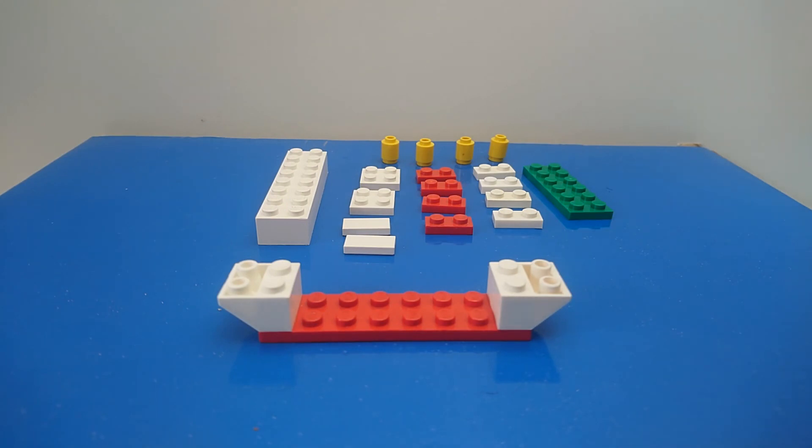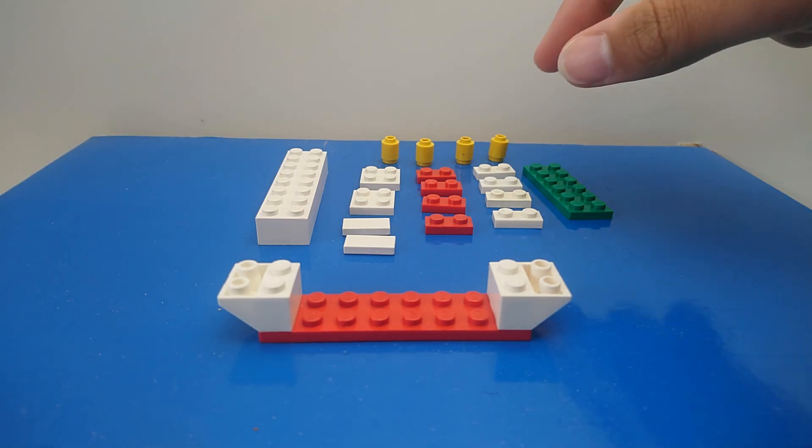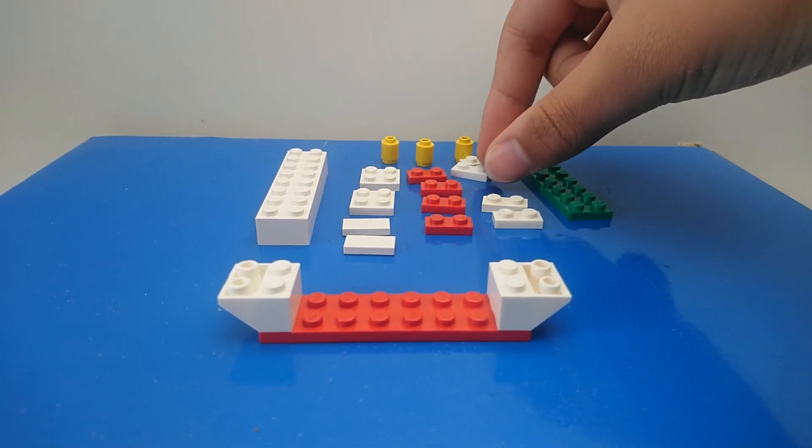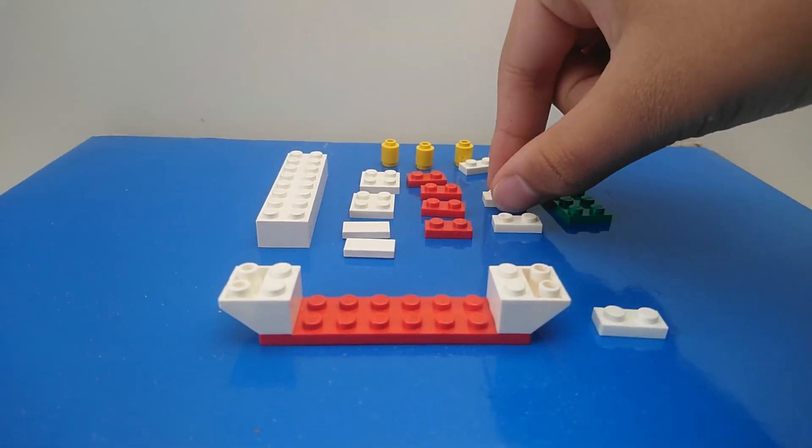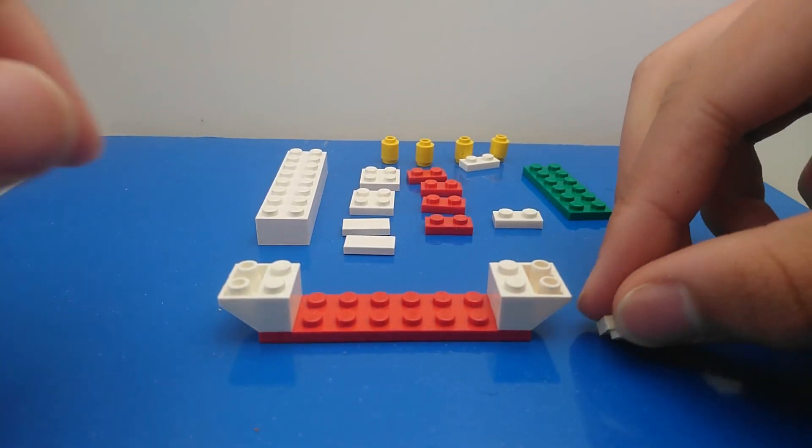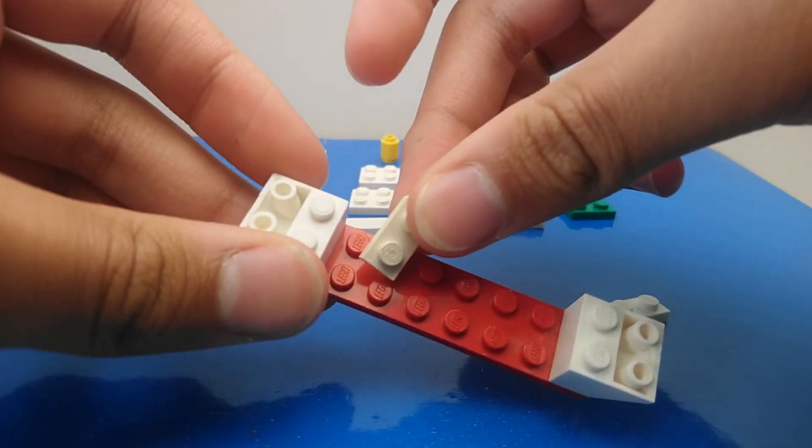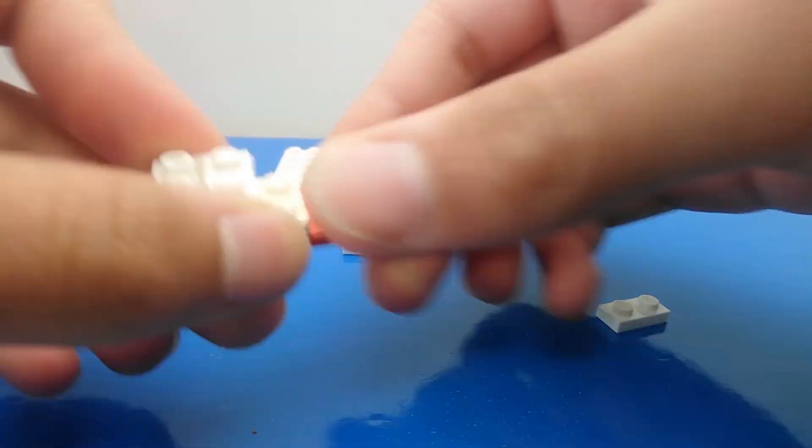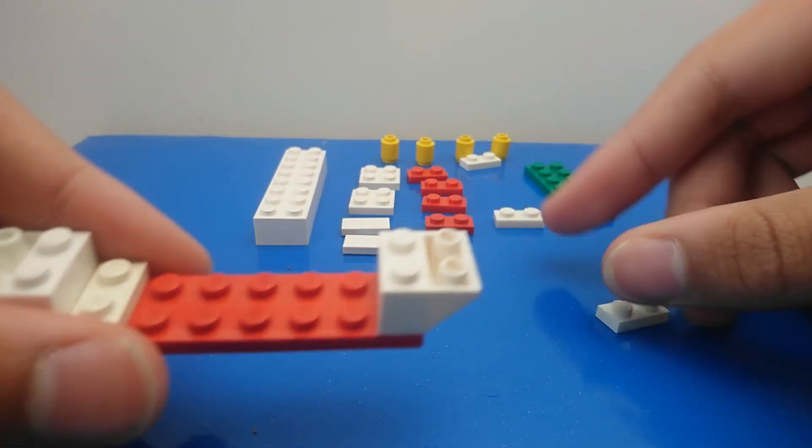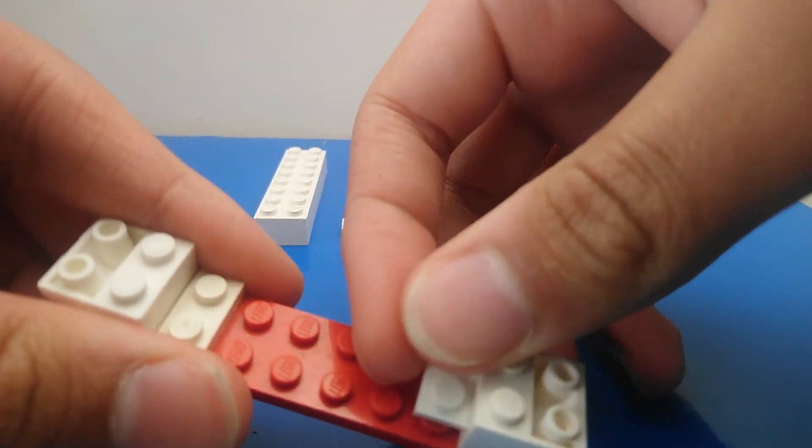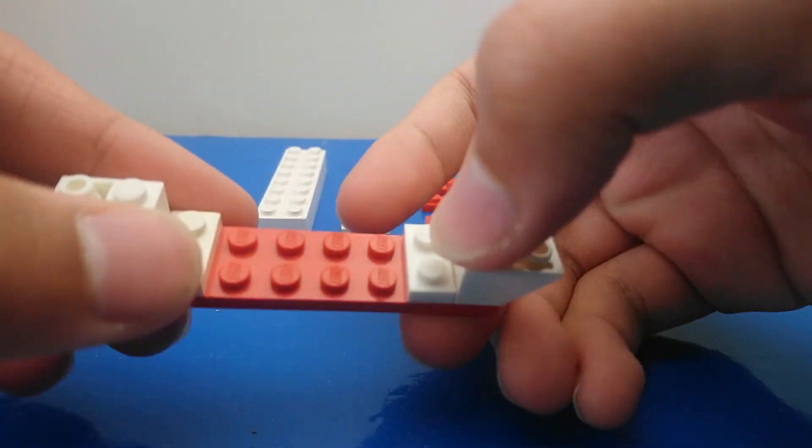For the red crosses on the side of the ship with the green line going through it, we're going to take two of our 1x2 white plates, and we're going to take one of them and put it right at one end as close as you can like that, and take the other one and place it as far as you can on the other end.